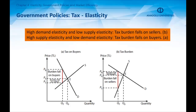A high demand elasticity and low supply elasticity causes sellers to pay for most of the tax. Conversely, a high supply elasticity and low demand elasticity causes buyers to pay for most of the tax.